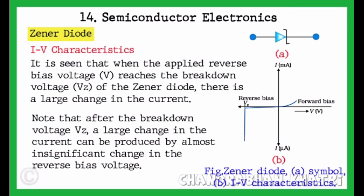Note that after the breakdown voltage VZ, a large change in the current can be produced by almost insignificant change in the reverse bias voltage, as you can see in figure B.